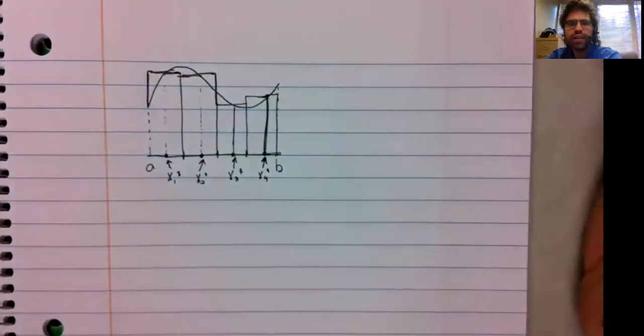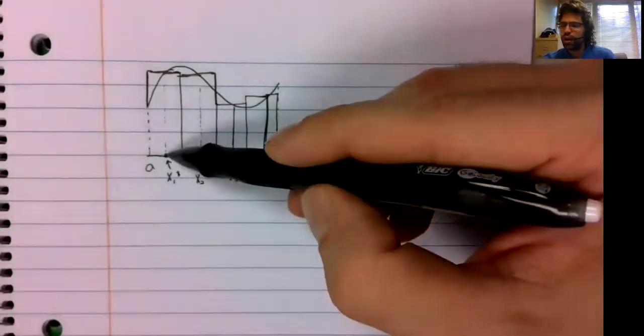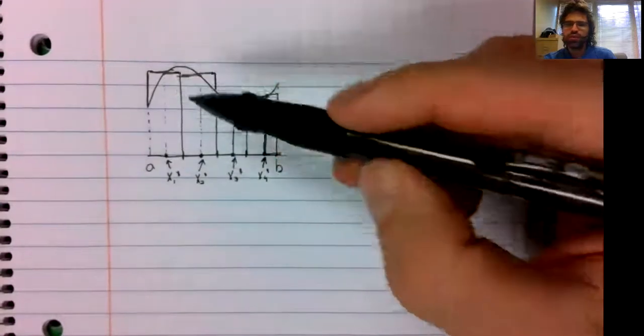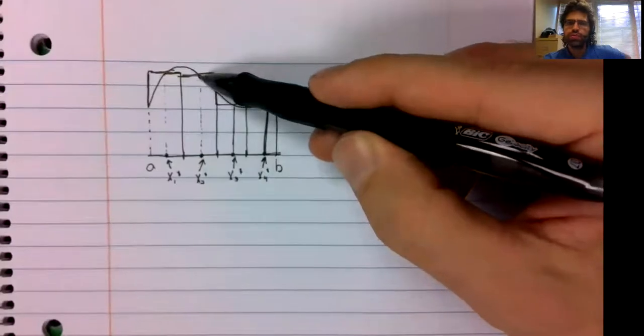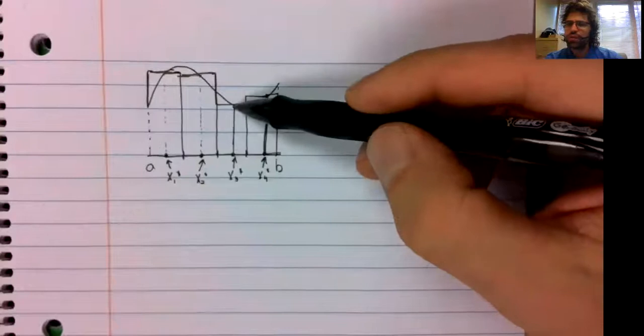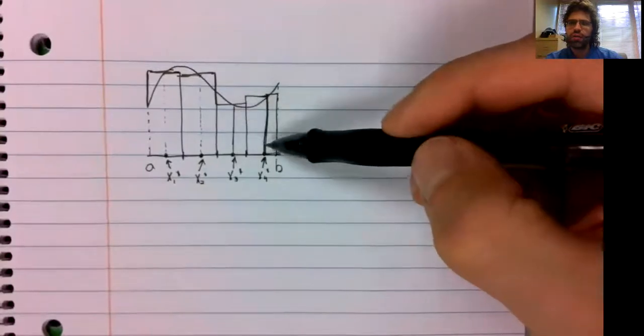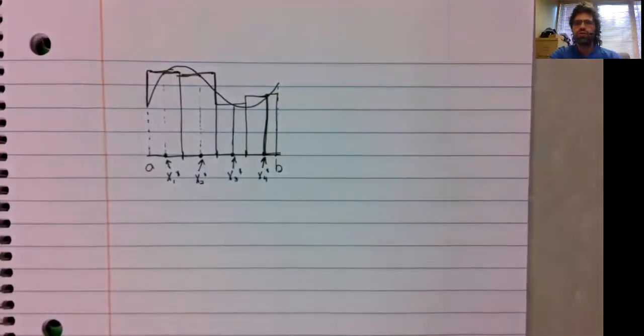The heights of these rectangles are F of X sub 1 star, F of X sub 2 star, F of X sub 3 star, F of X sub 4 star.